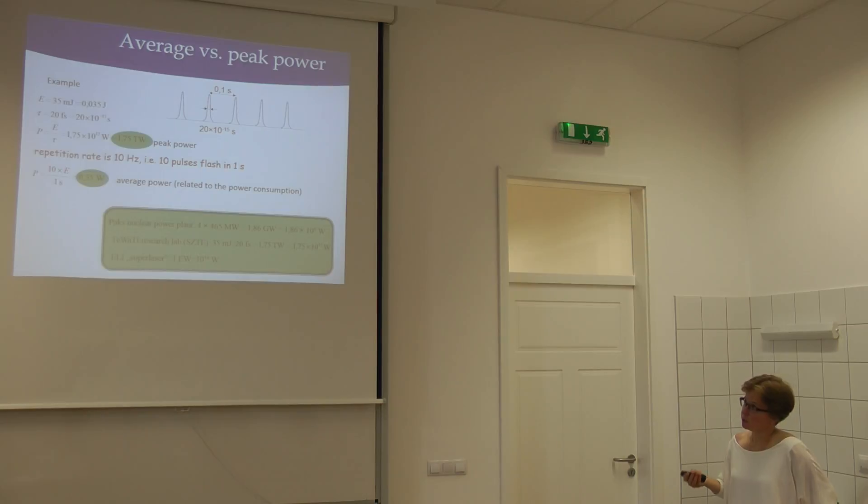But if we want to see what's the average power, we have to see that in each second we have 10 bursts, so each second the system gives out 0.35 joules, so the average power is 0.35 watts. So this is a very low number. The light bulbs consume something around 100 watts. This is really low.